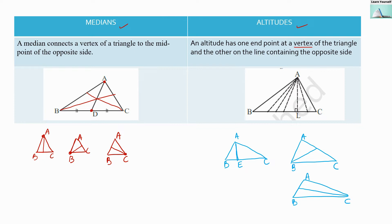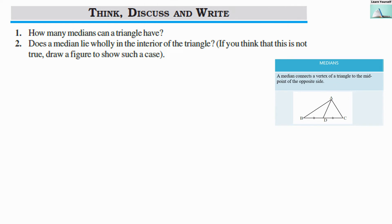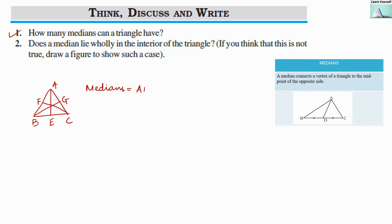Most of the time we check altitude to find the height of the triangle. Now let us look at questions based on median and altitude. Question one: how many medians can a triangle have? As discussed, each triangle will have three medians — from each vertex to the midpoint of the opposite side. Here we can see three medians: AE, BG, and CF.